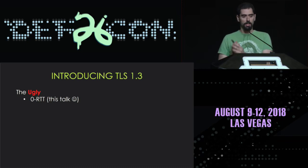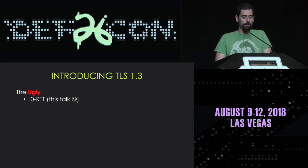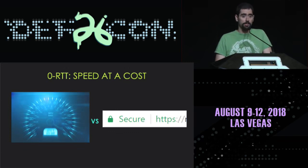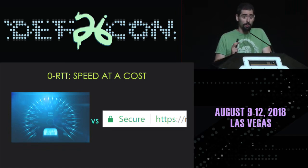So Zero RTT makes things faster by pushing data to the server. However, it has security implications. The first is that we lose perfect forward secrecy on Zero RTT messages. The second is that Zero RTT messages could be vulnerable to replay attacks — and that's really important, because with TLS, replay attacks were never one of our concerns. But that's going to change with Zero RTT.